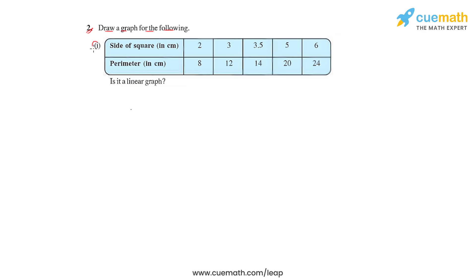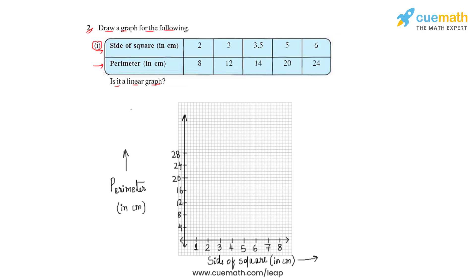In the first part, we have been given the side of a square and the respective perimeter, and we will also have to conclude whether it is a linear graph or not. Let us first plot these points on the coordinate axis, where the side of the square in centimeters is taken on the x-axis and the perimeter in centimeters is taken on the y-axis.